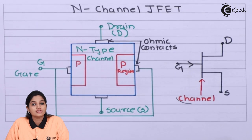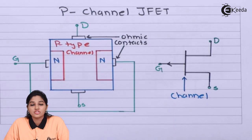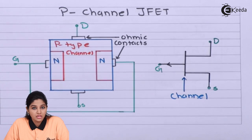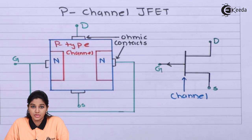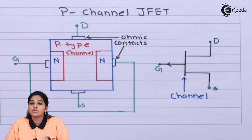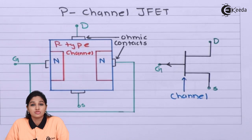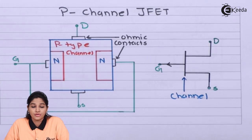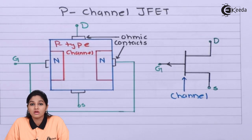Now let's see the construction of P-channel JFET. Similar to N-channel JFET, P-channel JFET also consists of a semiconducting bar, but now the bar is made of P-type semiconducting material with two heavily doped N-type regions. On both sides of the P-type semiconducting bar, two heavily doped N-type regions are diffused or alloyed to create two P-N junctions. The space between the junctions is called the channel, making it a P-channel JFET. Internally, both N-regions are connected together and a single wire is taken out to form the gate terminal.